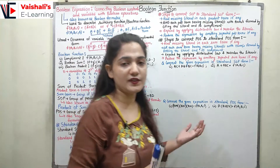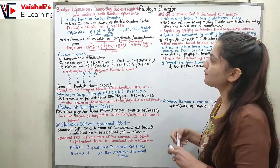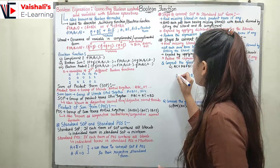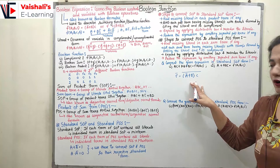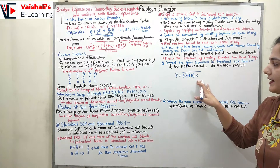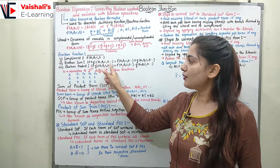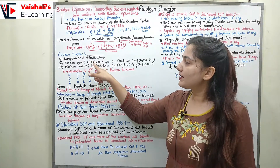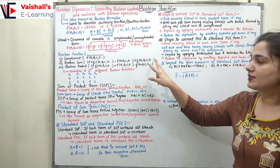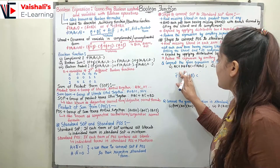We can perform basic operations on boolean functions. First, we can find the complement of a boolean function. If we have f = a_bar + b·c and want its complement, we apply De Morgan's law. We can also find the boolean sum: if we have two functions f and g on the same variables a, b, c, d, then f + g equals the sum of the individual functions. For example, if f = a_bar + b·c and g = a + b_bar·c_bar + a, then f + g = a_bar + b·c + a + b_bar·c_bar + a.